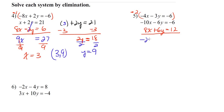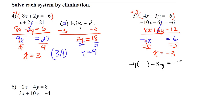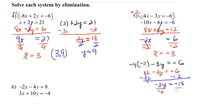Now we combine the equations: negative 10x plus 8x is negative 2x; negative 6y plus 6y cancels out; negative 6 plus 12 is 6. So we have negative 2x equals 6. Dividing both sides by negative 2 gives x equals negative 3. Plugging back into the first original equation: negative 4 times negative 3 is positive 12, so 12 minus 3y equals negative 6. Subtract 12 from both sides to get negative 3y equals negative 18, then divide by negative 3 to get y equals 6. Our solution is the ordered pair negative 3 comma 6.